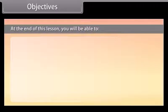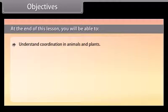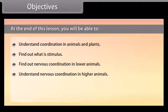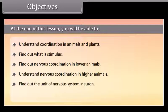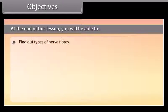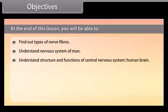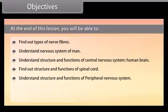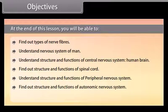At the end of this lesson, you will be able to: understand coordination in animals and plants; find out what a stimulus is; find out nervous coordination in lower animals; understand nervous coordination in higher animals; find out the unit of the nervous system; find out types of neurons; find out types of nerve fibers; understand the nervous system of man; understand the structure and functions of the central nervous system, the human brain, the spinal cord, the peripheral nervous system, and the autonomic nervous system; and understand reflex actions.